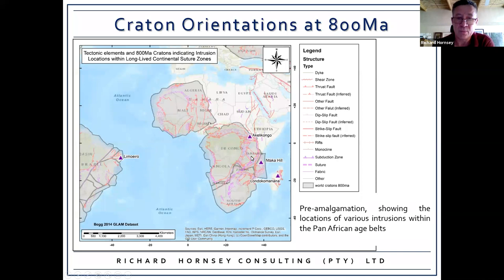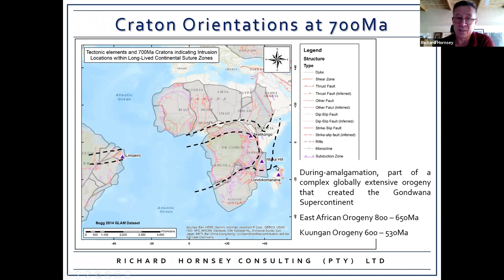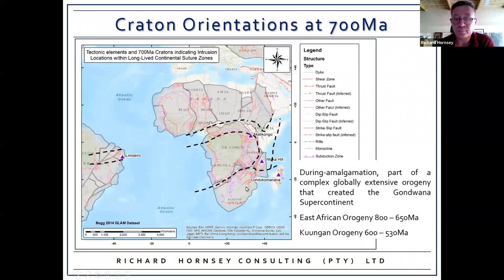We're going to look at Antarka Hill, Limoeiro, Akali Congo, and Londo Commonana, and their locations on this reconstruction. Fast-forwarding to 700 million years, Africa has amalgamated and the orogenic belts have formed — the Borborema coming through into the northern Congo region, and a southern belt where the southern part of Gondwanaland amalgamated onto the rest of the continent.